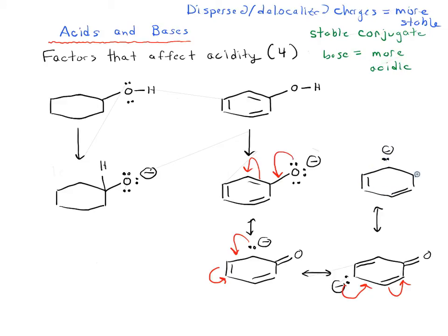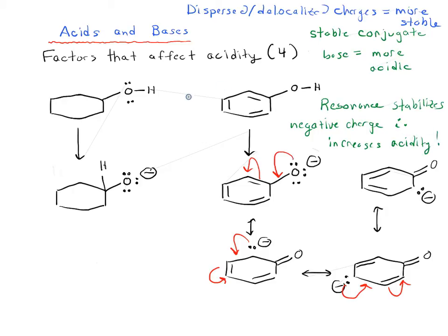You can see that we've got four different resonance forms for this molecule on the right, which means this negative charge can be dispersed through a number of different atoms. Resonance stabilizes negative charge and therefore increases acidity. This alcohol on the right, phenol, is more acidic, while cyclohexanol on the left is less acidic.